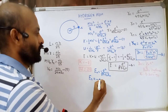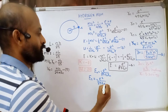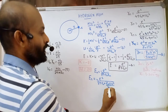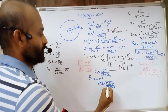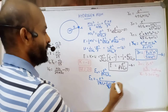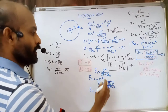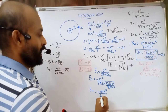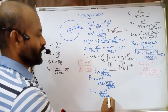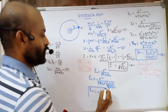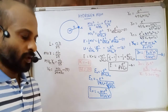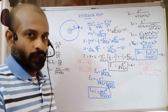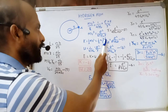Substituting the value of rn — which is epsilon zero h squared n squared by pi m e squared — into the total energy equation, pi cancels. Rearranging, we get en equals minus m e to the power four divided by eight epsilon zero squared h squared n squared. This is the equation for the total energy of an electron in the nth orbit.